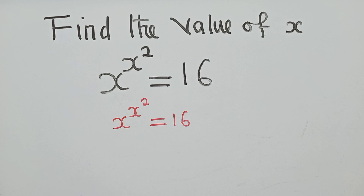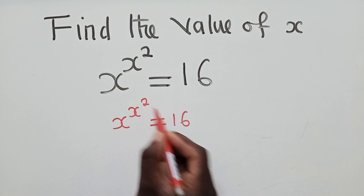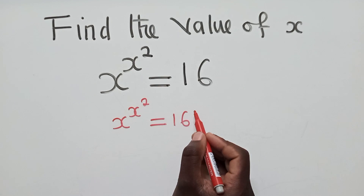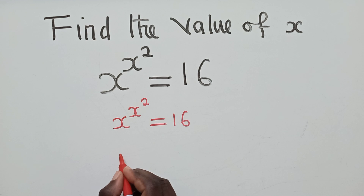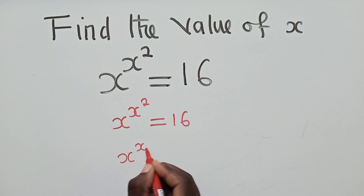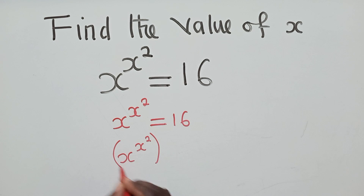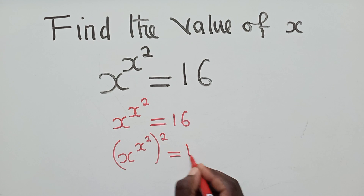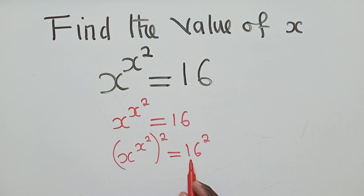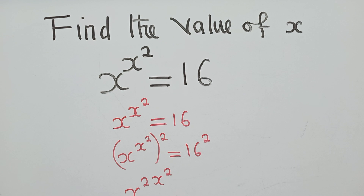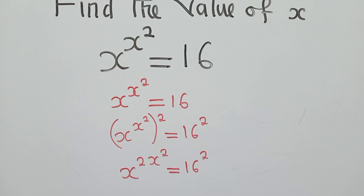The power which is here must be put to both sides — this is the method and procedure you must follow. So we say x to the power x, and the power 2 there, meaning the value of the power you can see here must be applied, giving us x power 2x power 2, which is equal to 16 power 2.